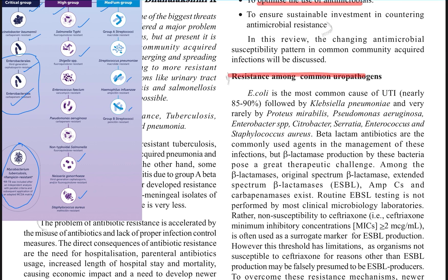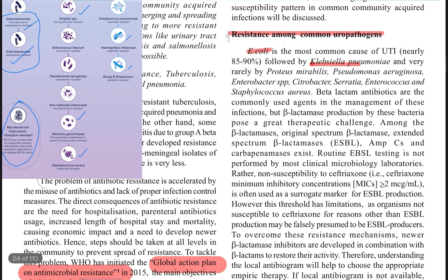Regarding resistance among common uropathogens — E. coli and Klebsiella are the two most common organisms, apart from Proteus, Pseudomonas, and Enterobacter. The common first-line antibiotic for uncomplicated urinary tract infection can be cefixime. The problem is these organisms are producing beta-lactamases, which makes it a therapeutic challenge — we can't just put the patient on an oral antibiotic and send them home.